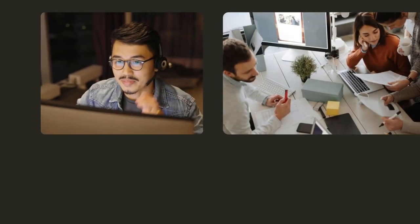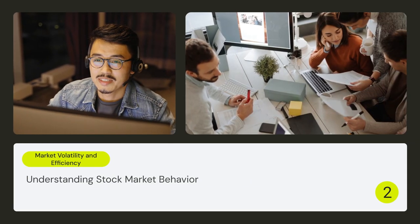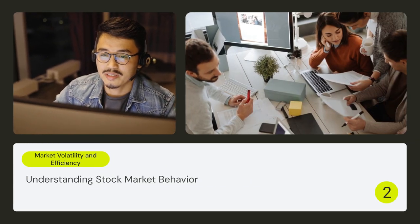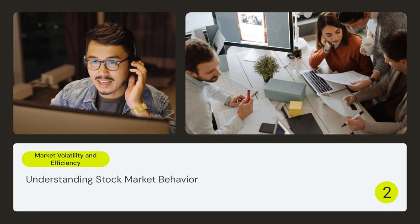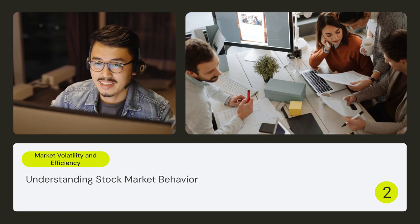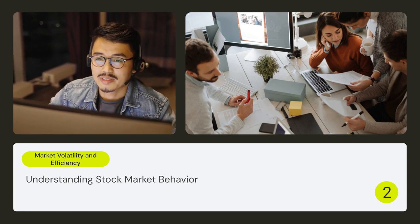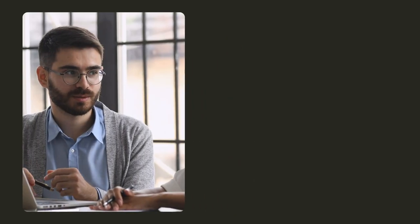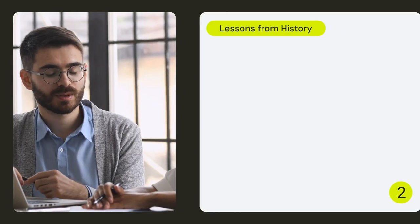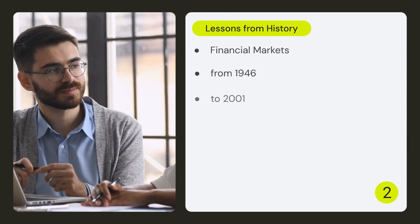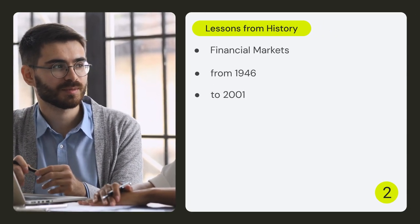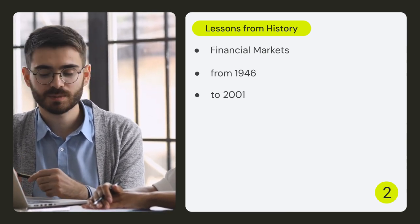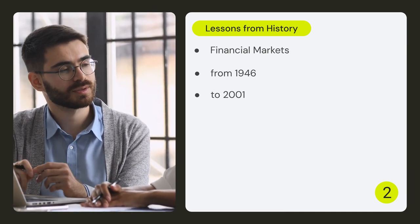Stock returns can be volatile, and markets are often efficient. This means prices reflect all available information, making it difficult to consistently outperform the market. Historical data from 1946 to 2001 shows us that while riskier assets generally offer higher returns, the market's behavior is far from predictable.